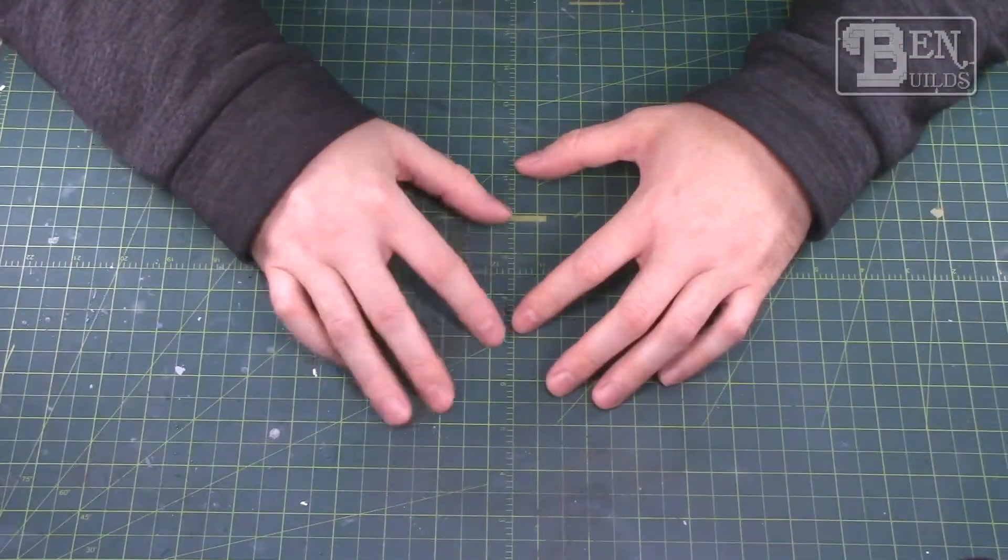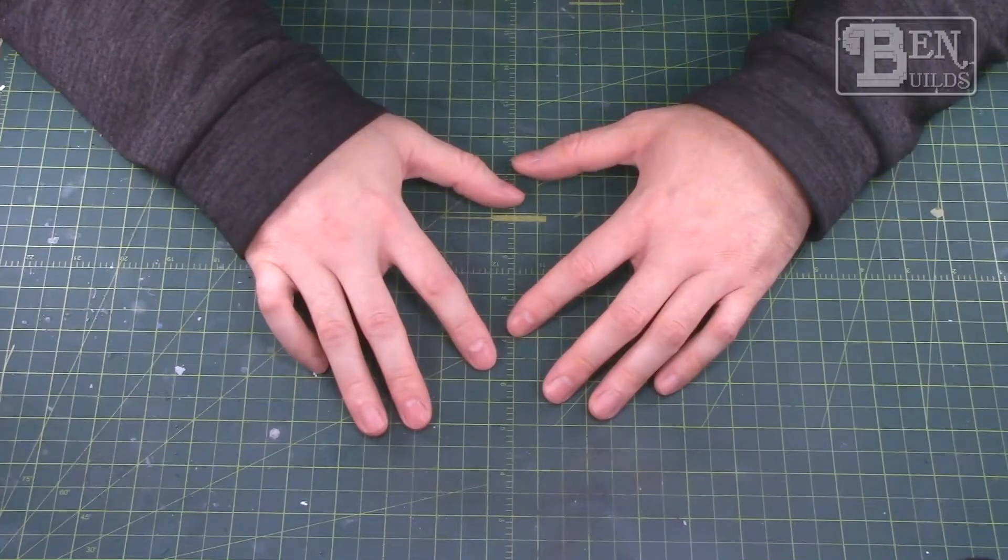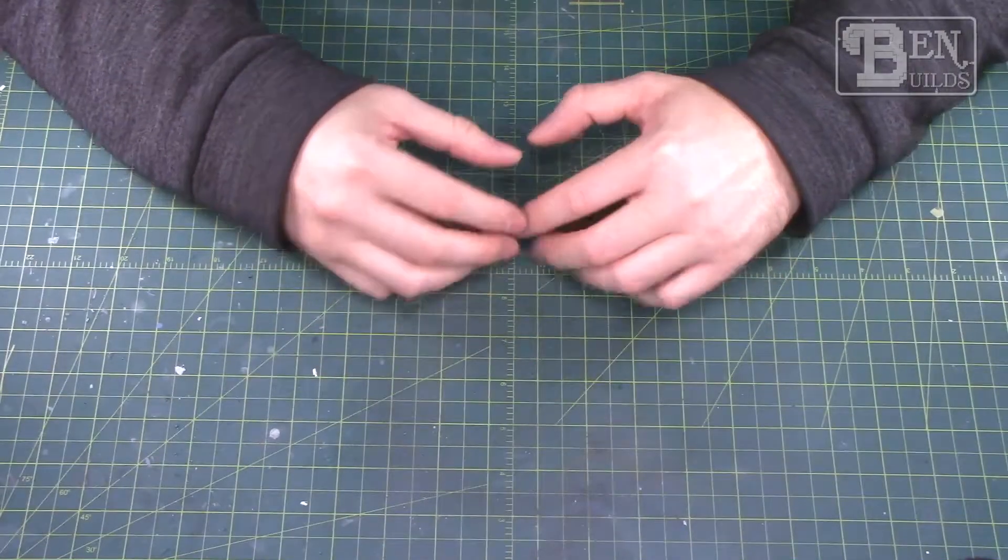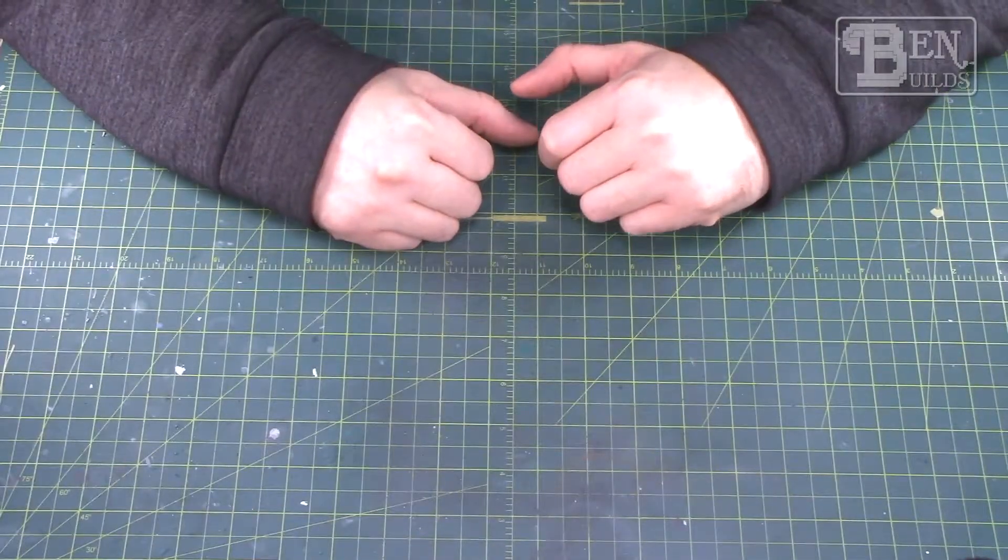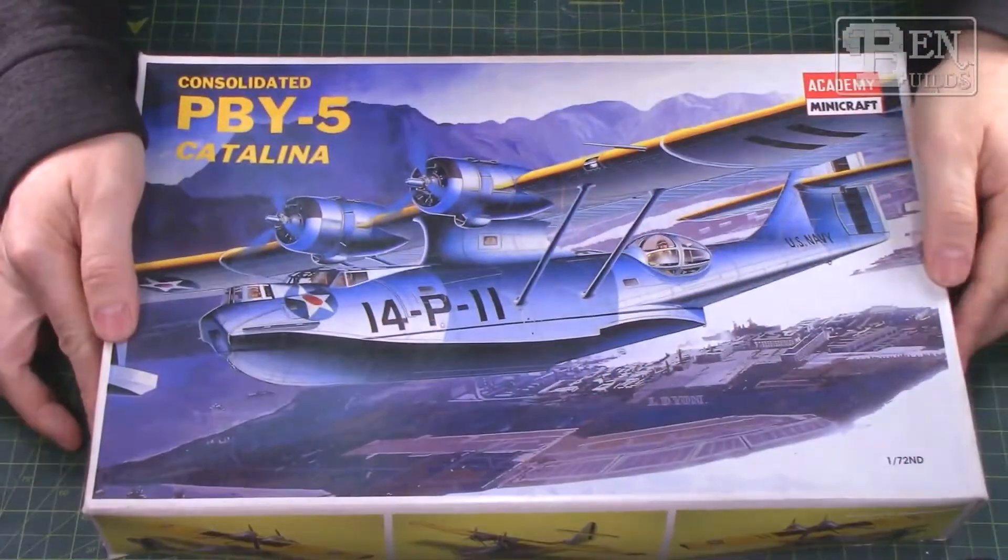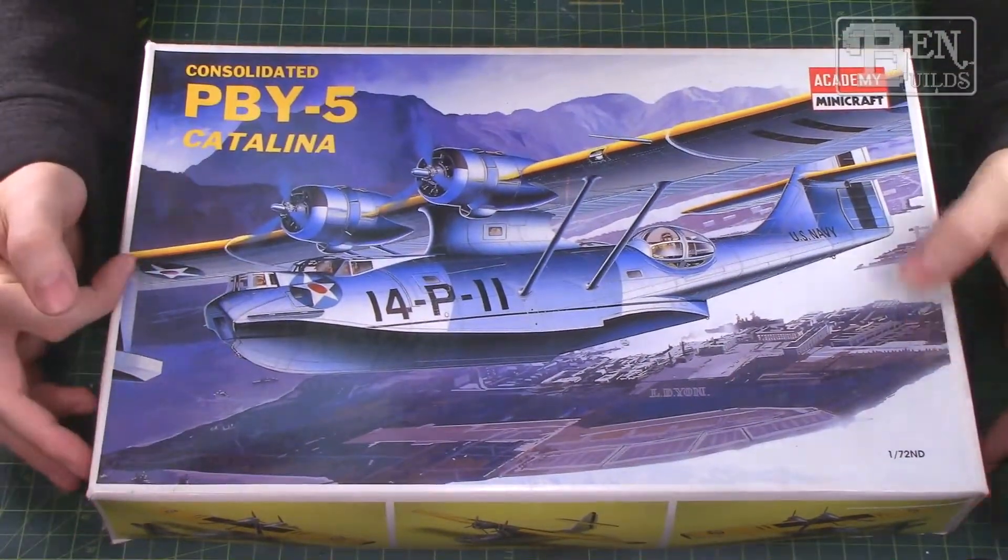So let's go ahead and take a look at what we're going to be building. Now this group build is the Pearl Harbor group build, started back in December 7th of 2021. It's going to go till I believe June 6th of 2022, so I think we have some time. We should be able to wrap something up, so I'm going to go ahead and show you the kit here.